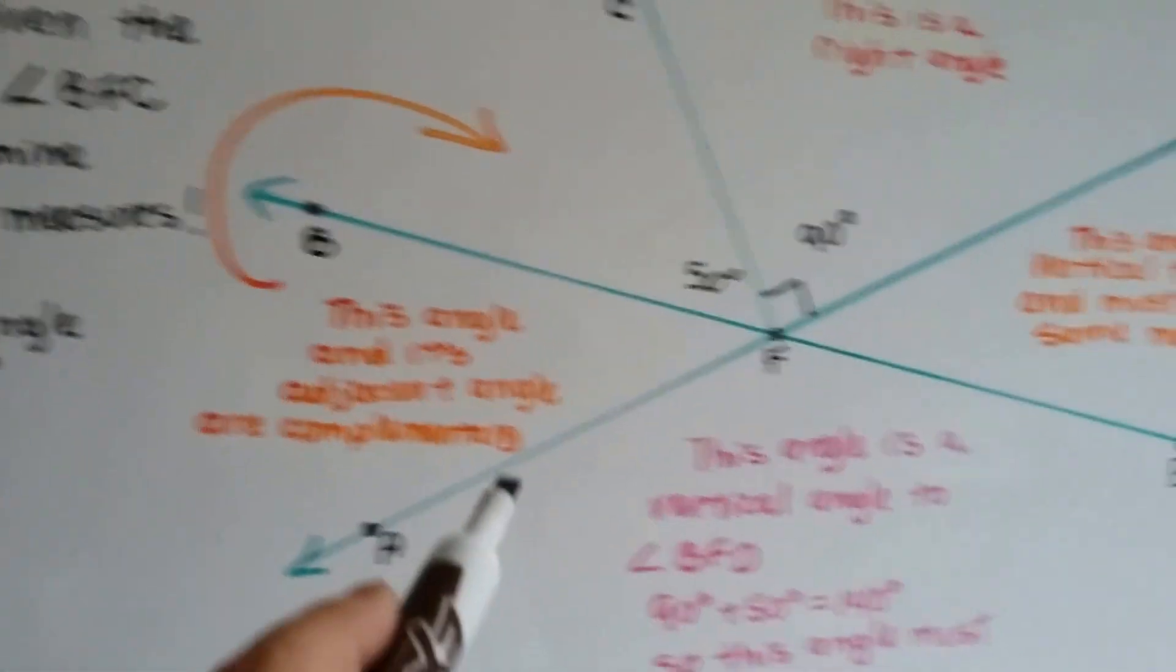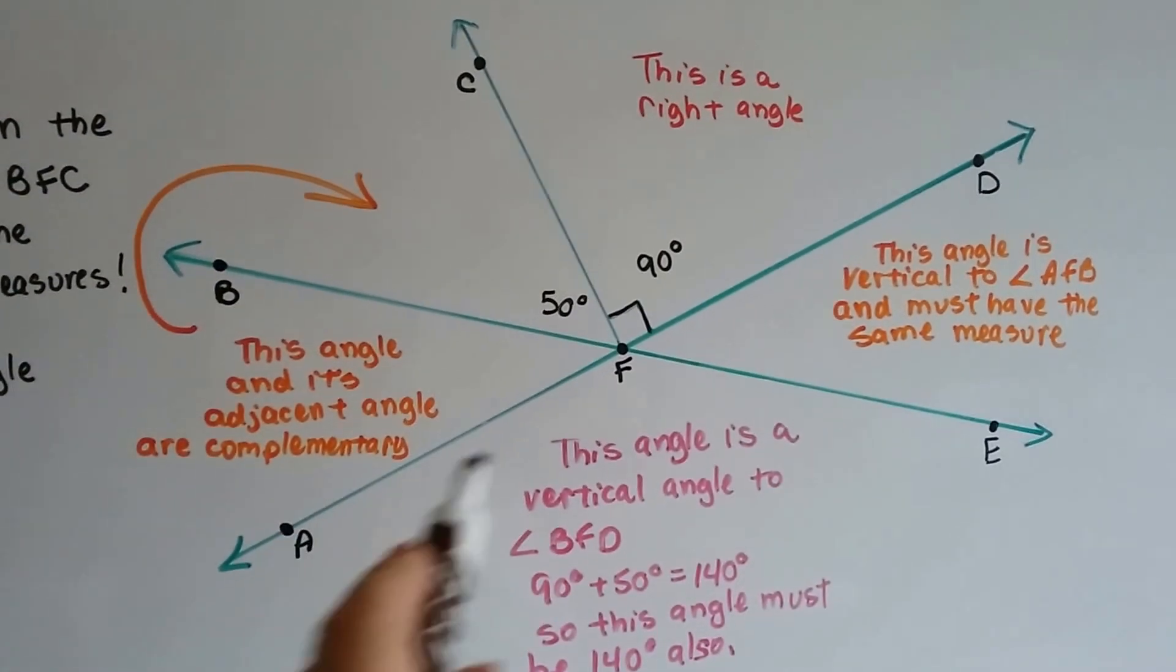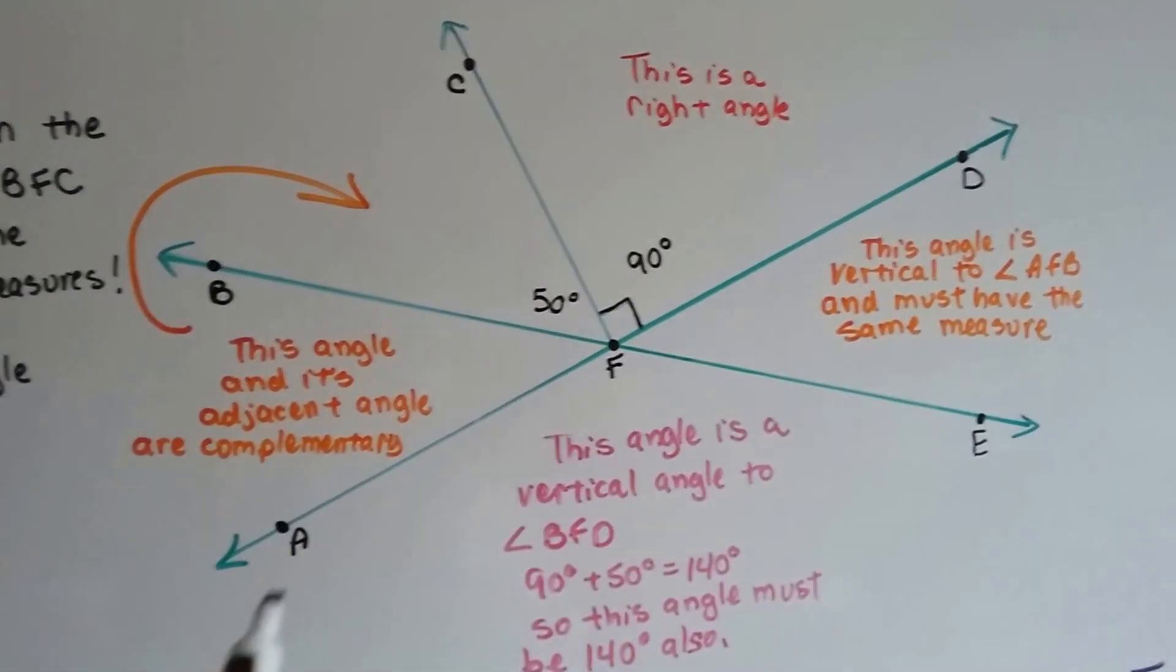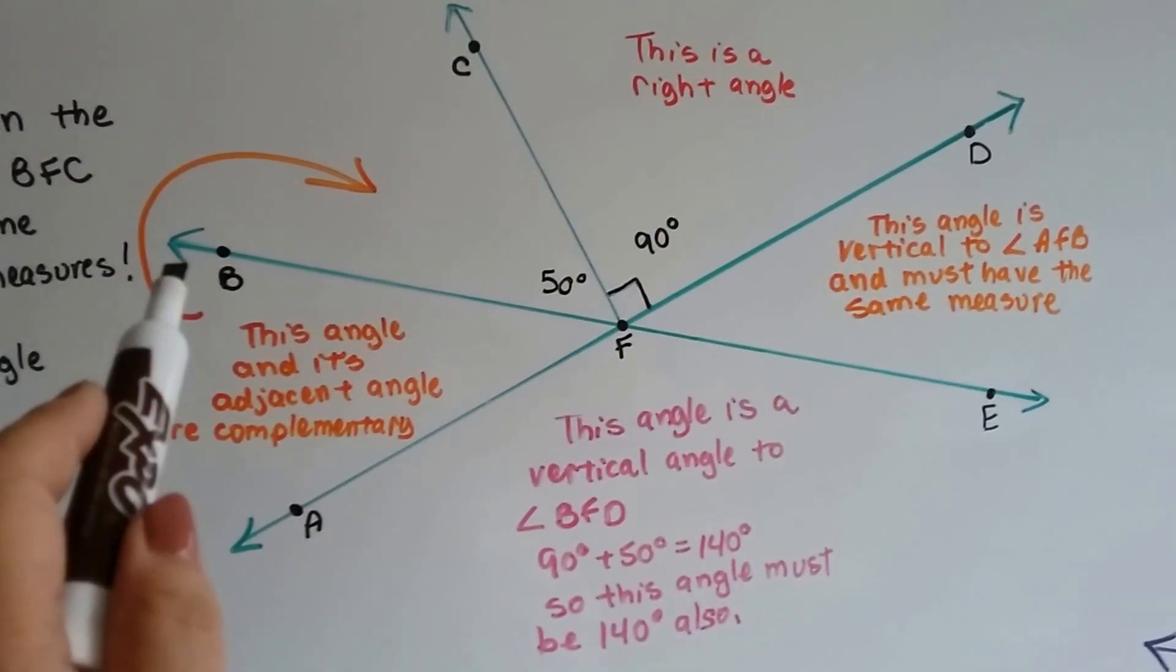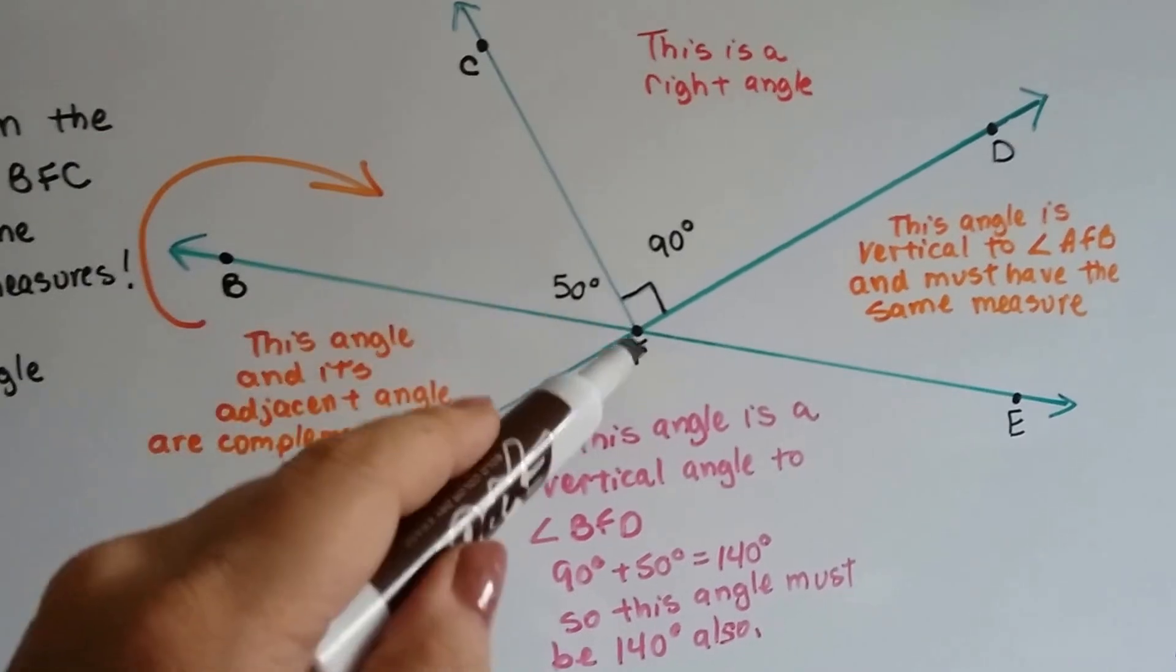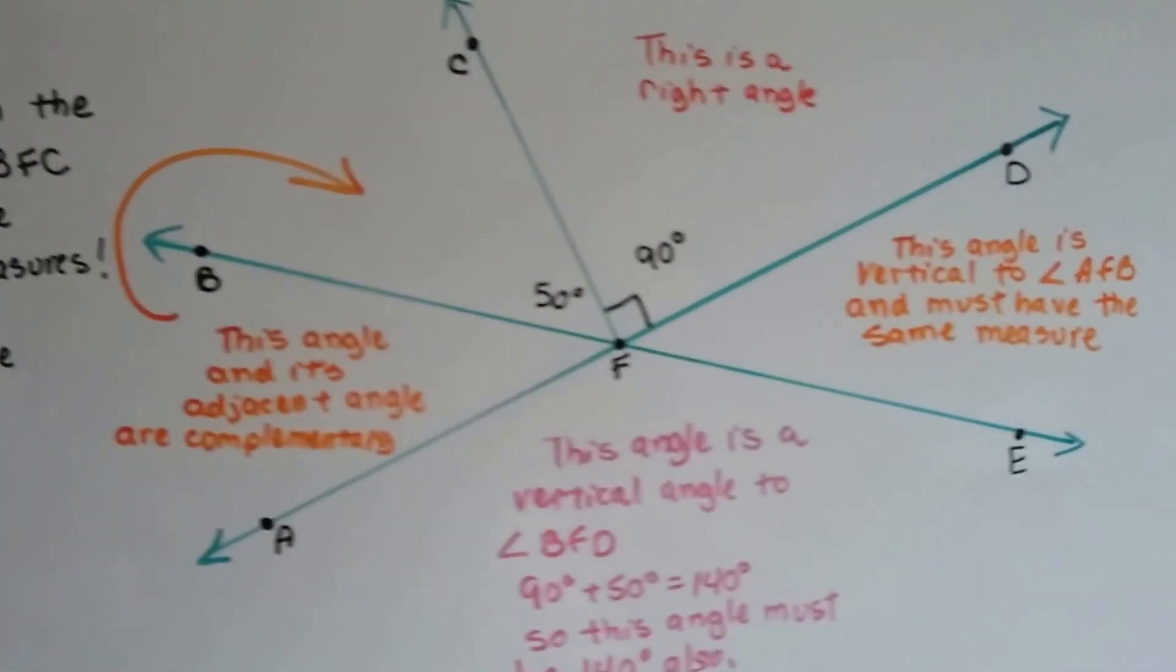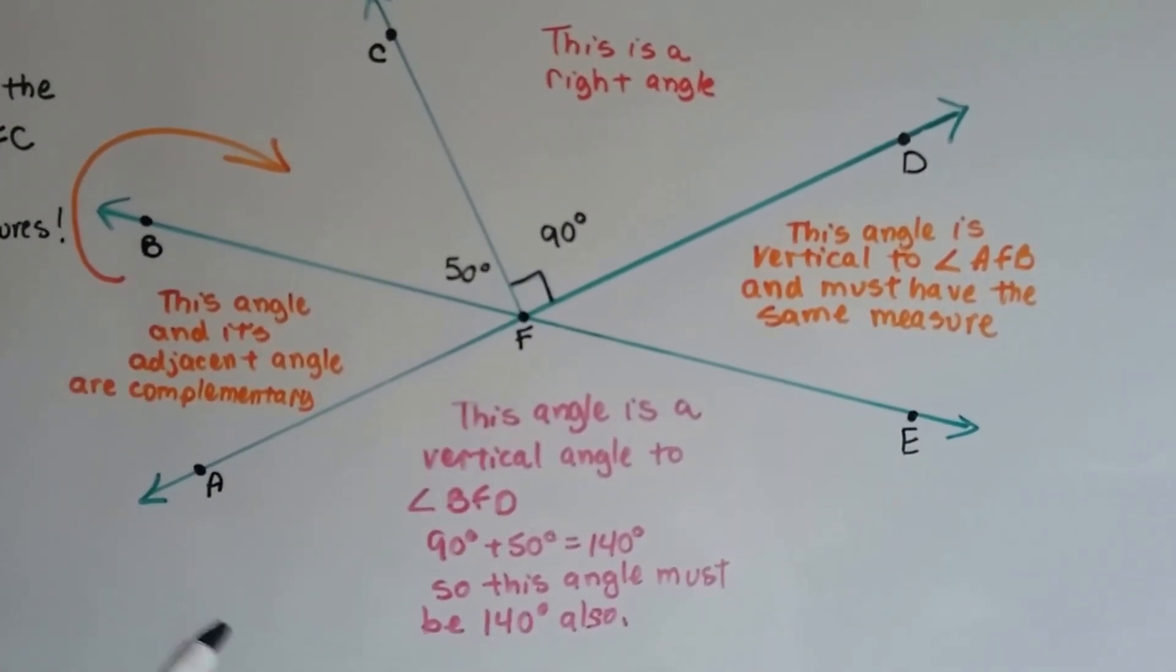Take a look at this one. We've got a line AD right here. AD, that's the line, and we have line BE. It goes all the way across this way. We have line CF going this way, and because of the way they're labeled, we can read the name of the angles, the label of the angles.